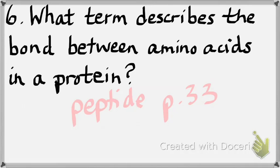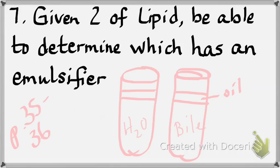On page 36 we did two test tubes — one with water and oil, another with bile and oil. On the test, you can shake them and identify them. The water and oil test tube won't mix well and the oil will keep going to the top. The bile and oil test tube will show oil broken into little droplets. You'll have to do that as a skill on Thursday.